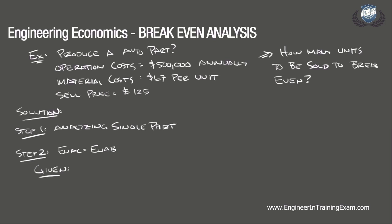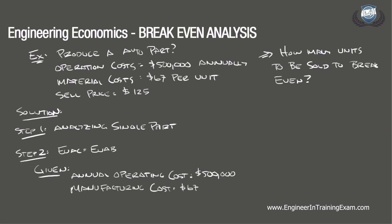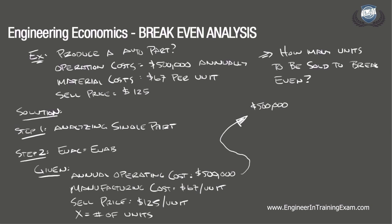We are given the following information: an annual operating cost of $500,000; a manufacturing cost per part of $67; an average sell price per part of $125; and we are solving for X, the number of units. Plugging this into our equality: $500,000 + $67X = $125X. Solving for X, we get X = 8,621 units. The company would need to sell 8,621 units annually to break even on this investment.